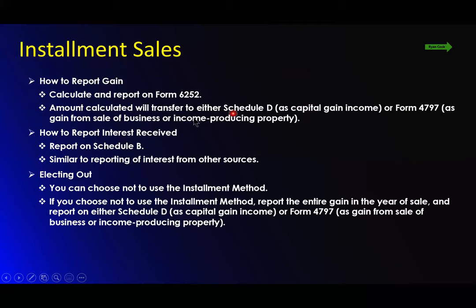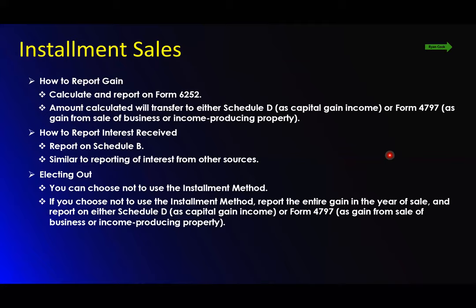How to report interest received: it's reported on Schedule B, similar to reporting interest of other sources — interest income. You can choose not to use the installment method. If you choose not to use it, you can report the entire gain in the year of the sale and report it on either Schedule D or Form 4797, depending on which one it's coming from. If it's a sole proprietorship, you can report it on Schedule D as a capital gain, or on Form 4797 as gain from the sale of the business or property if it's a C Corp or non-pass-through.